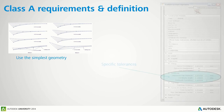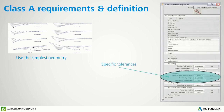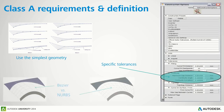These are typical Class A requirements and concepts: use the simplest geometry, make sure you've got your construction tolerances, use Bezier versus NURBS. These are the things people would say a Class A surface person has to know.